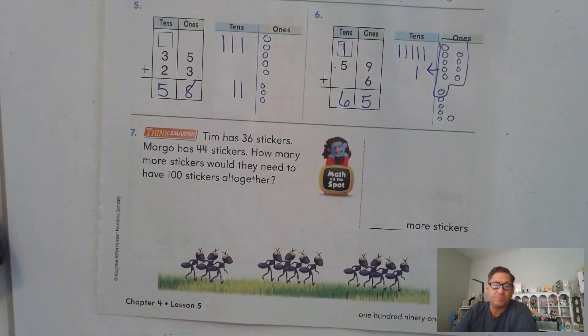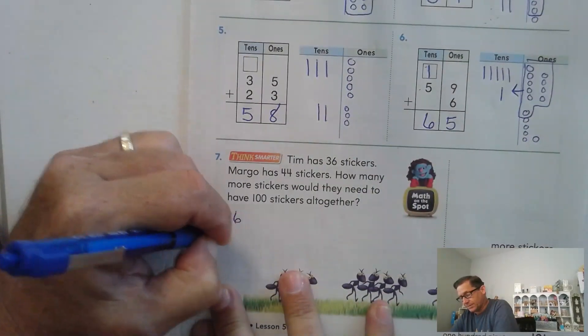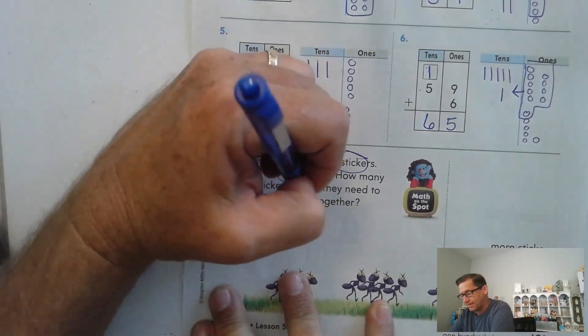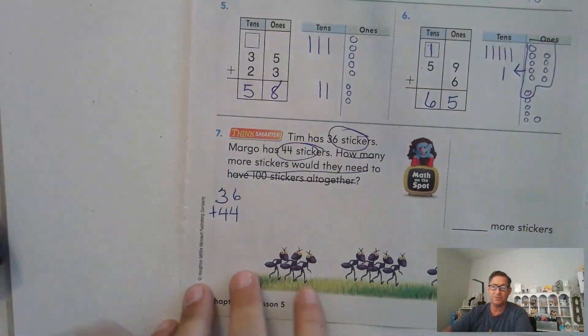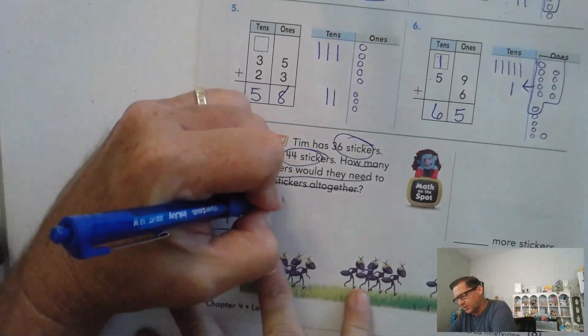Kim has 36 stickers. Margo has 44 stickers. How many more stickers would they need to have 100 stickers together? All right, so we have 36 plus 44. How many more will we need to get to 100? Let's see how many we have already. So let's go ahead and draw a quick picture.